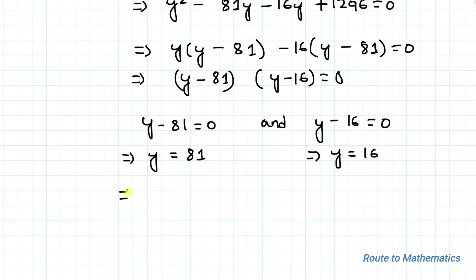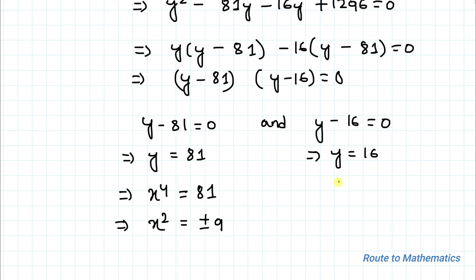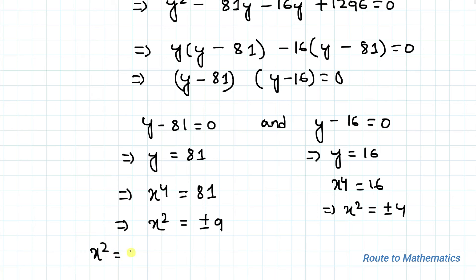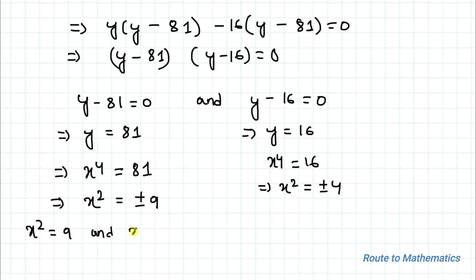Since y equals x to the power 4, for y equals 81 we have x to the power 4 equals 81. Taking the square root, x squared equals plus or minus 9, giving x squared equals positive 9 and x squared equals negative 9.